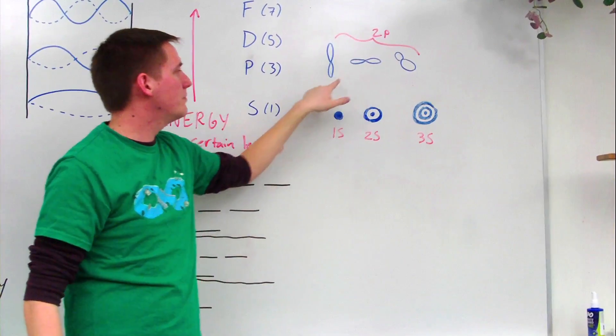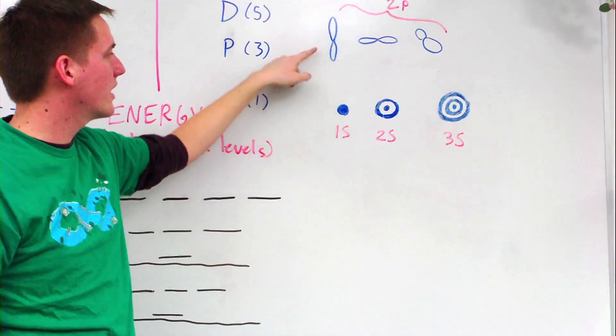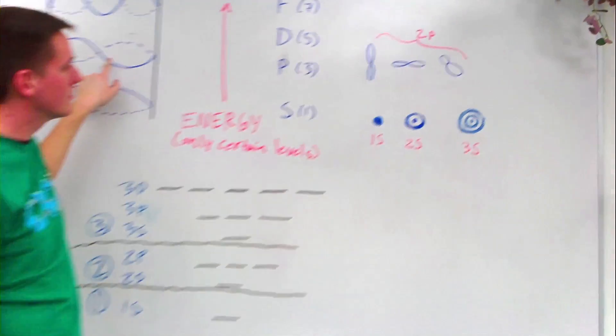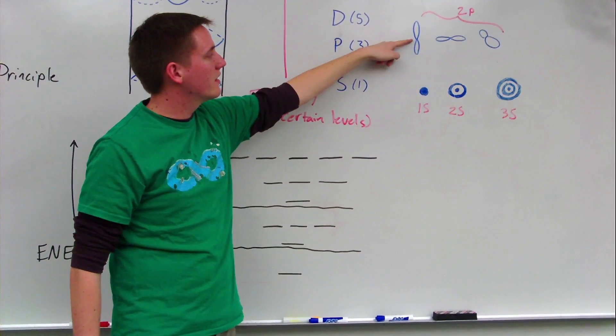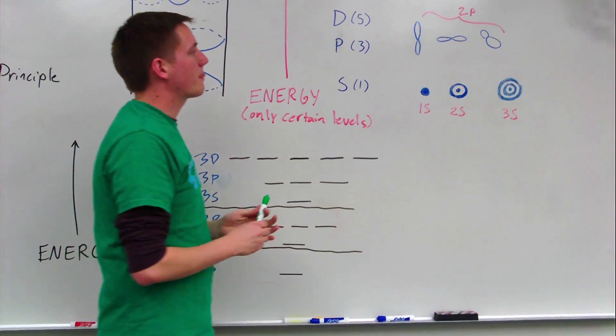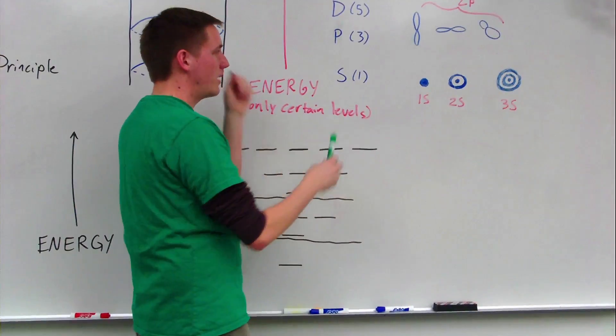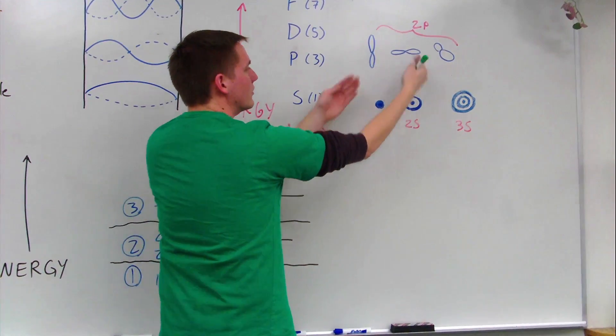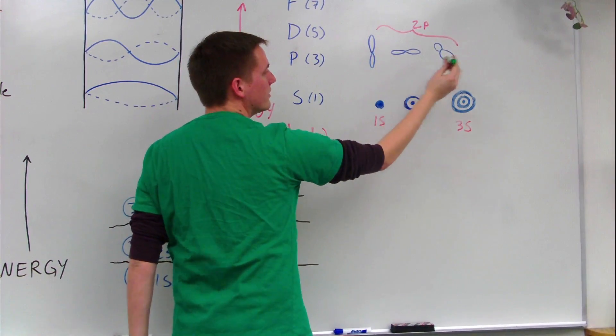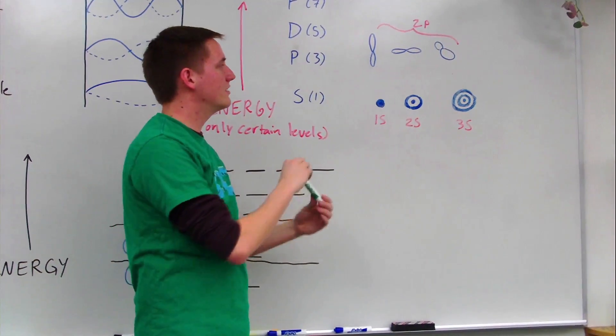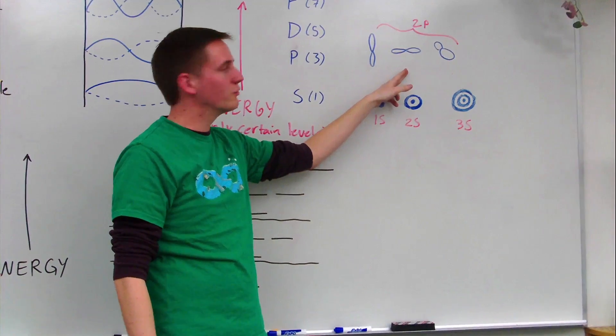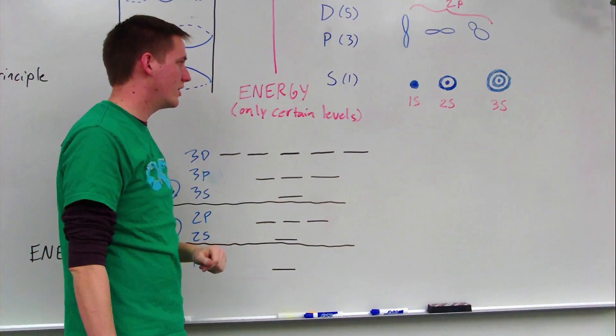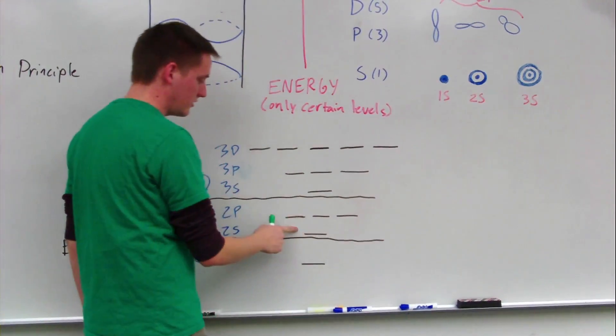And the shape of all the p orbitals is the same. It looks kind of like a dumbbell. And so right there at the middle, that's going to be a node, like we have here in standing waves. And the nucleus is going to be found right there at the node. And these orbitals, we have three of them, and they're all kind of overlapping each other. But there's going to be one that's oriented up and down, another that's going to be left and right. And a third one that would be kind of coming in and out of the board. So we have these three 2p orbitals, which are all at right angles to each other. And they're all overlapping the 1s and the 2s orbitals as well.